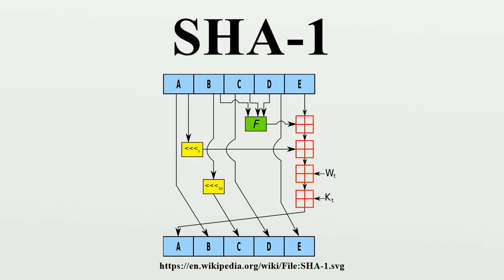This version is now often named SHA-0. It was withdrawn by the NSA shortly after publication and was superseded by the revised version, published in 1995 in FIPS Pub 180-1 and commonly designated SHA-1. SHA-1 differs from SHA-0 only by a single bitwise rotation in the message schedule of its compression function. This was done, according to the NSA, to correct a flaw in the original algorithm which reduced its cryptographic security.